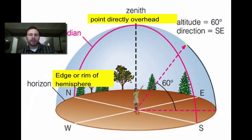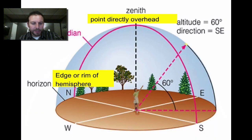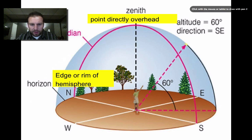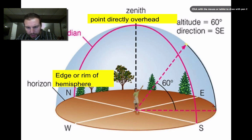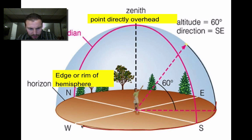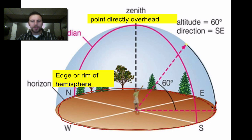The celestial sphere has a few parts that we need to take a look at. We have the azimuth direction right around the bottom. Right here where the dome meets is our horizon — this portion that goes all the way around. So if you go to the beach and look straight out into the water, where the sky meets the land, that's your horizon.